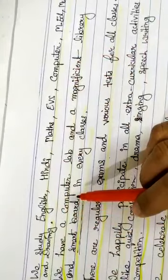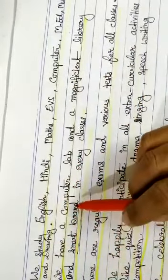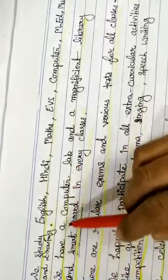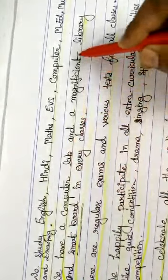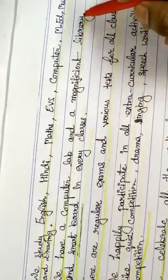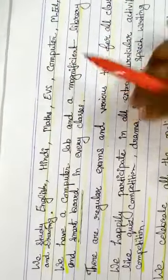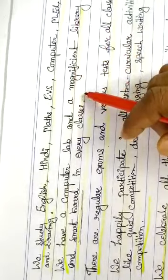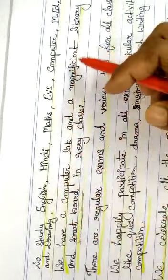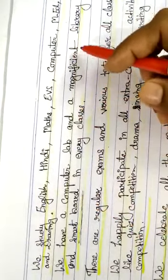What more facilities do we have? We have a computer lab where children love to work on keyboards — they do drawing, studies, and many things. We also have a magnificent — meaning big — library. The library has various types of books: academic books, story books, and many more. Both teachers and students study there. According to the routine, you have a library period as well.